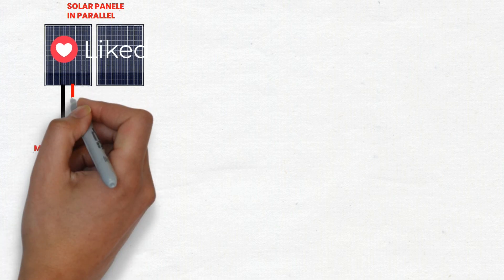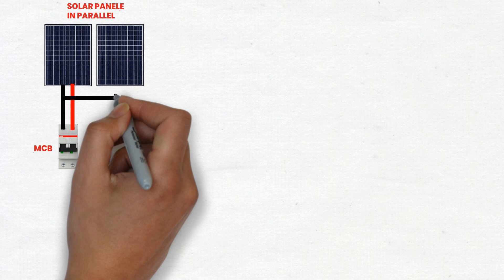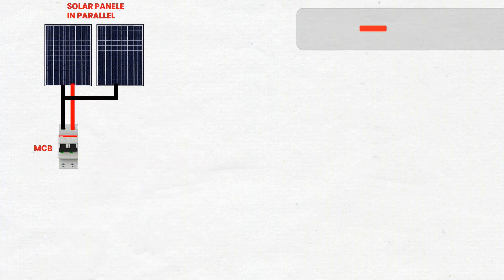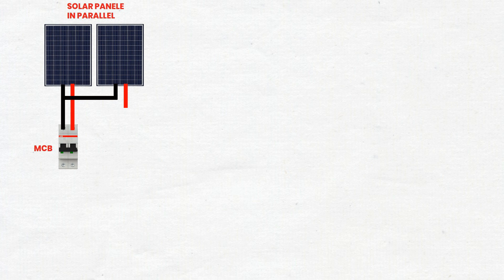Depending on your system voltage, connect the solar panels in series for higher voltage or parallel for higher current using MC4 connectors. Use appropriate gauge cables to connect the output of the solar panels to the input terminals of the first MCB.